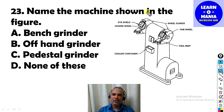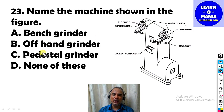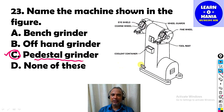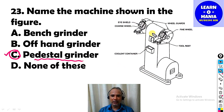Next MCQ: Name the machine shown in the figure. The machine shown has grinding wheels. This machine is called a pedestal grinder — because it stands on the floor and can be used while standing on the ground.